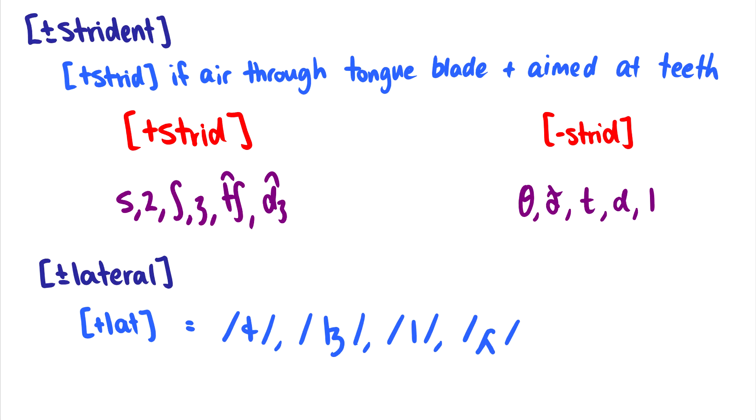Okay, the third feature is plus or minus strident. And the feature strident is kind of hard to get your head around. Essentially, we say it's plus strident if there's air flowing through the tongue blade, and it's aimed at the teeth. So strident, or we could even call this sibilant. So if you've heard the words sibilants before, things like s, z, sh, j, ch, j. In other words, if we just think of strident as being these six sounds, and thinking, oh, these really turbulent s sounds are a group that are plus strident, that's a good way to look at things.